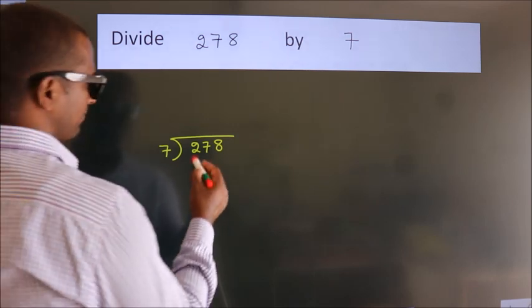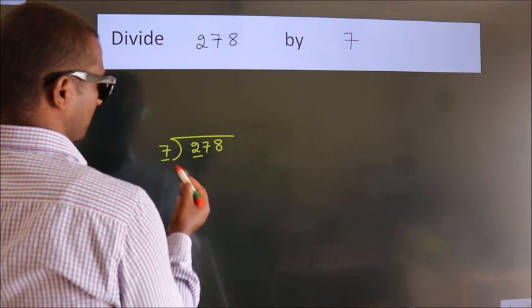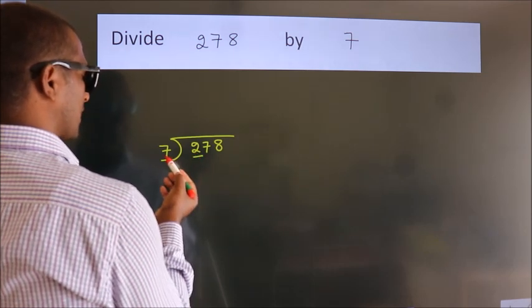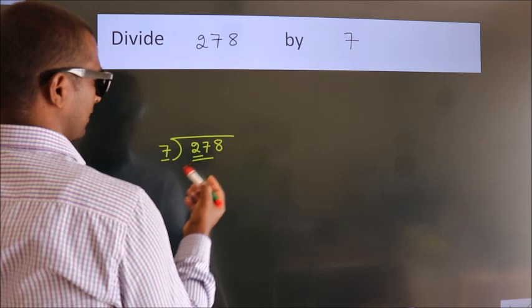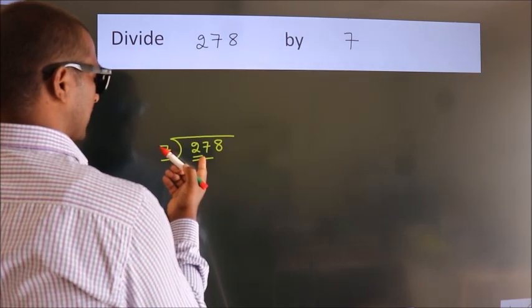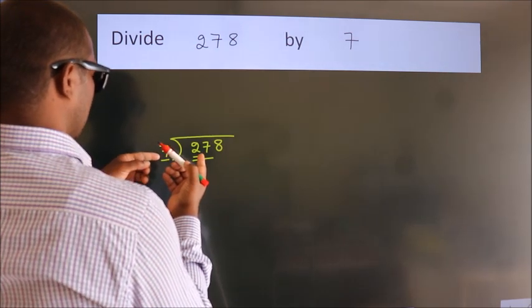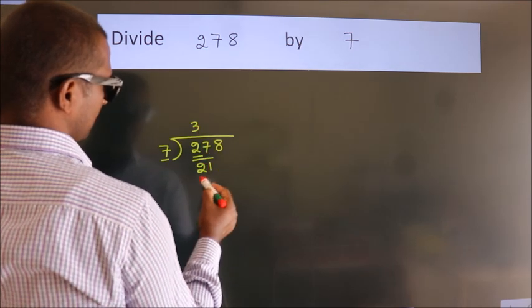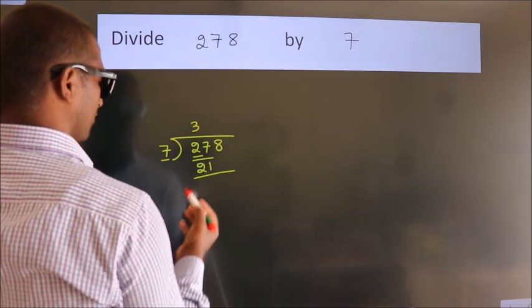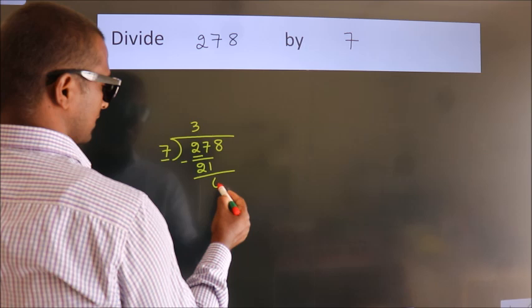Next, here we have 2, here 7. 2 is smaller than 7, so we should take 2 numbers: 27. A number close to 27 in the 7 table is 7 threes, 21. Now we should subtract. We get 6.